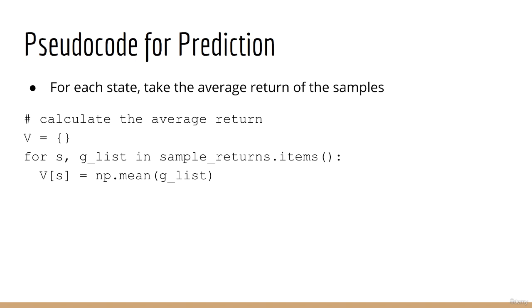Finally, when the first loop is complete, we are done collecting our samples. Now we can calculate the average return, which is by definition the value function. So we loop through each of the items in our sample returns dictionary. For each iteration, we get the state s and a list of sample returns glist. Inside the loop, v is simply assigned the sample mean of glist.